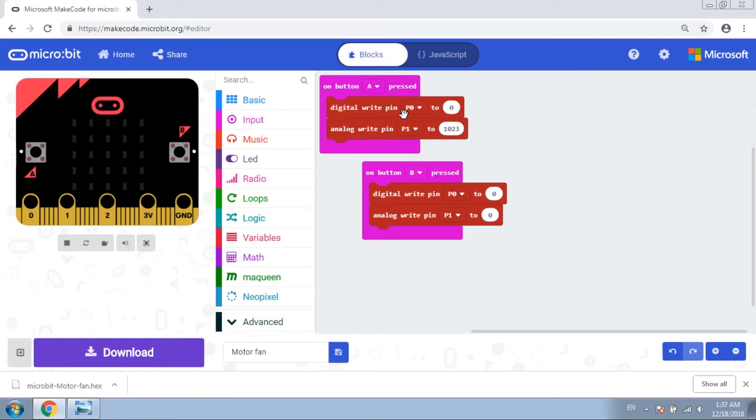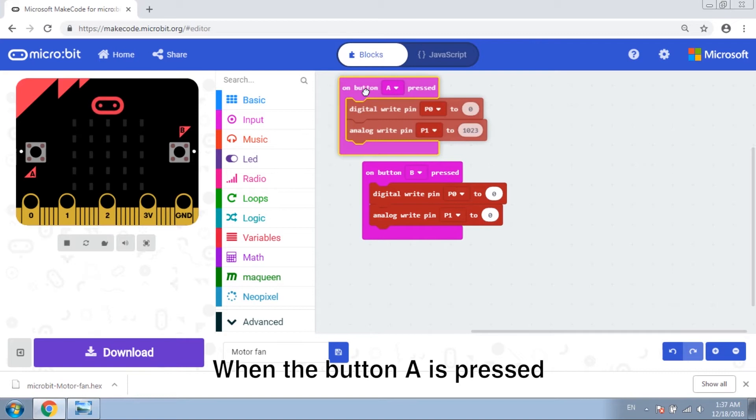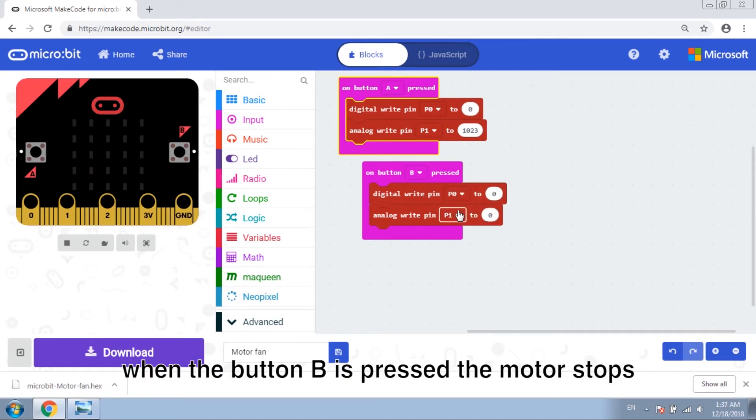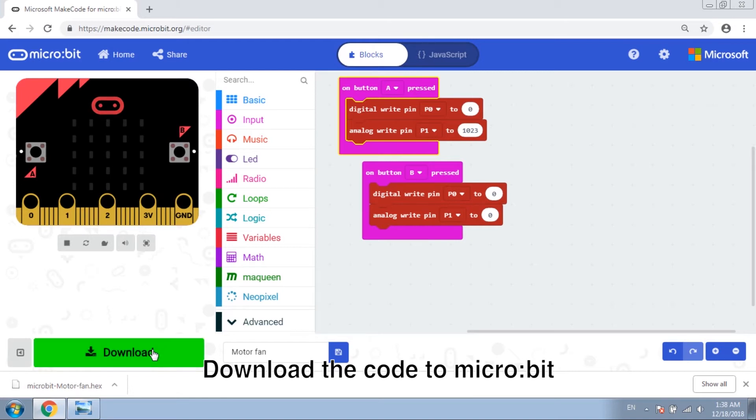You see, when button A is pressed, the motor rotates at maximum speed. When button B is pressed, the motor stops. Download the code to micro:bit.